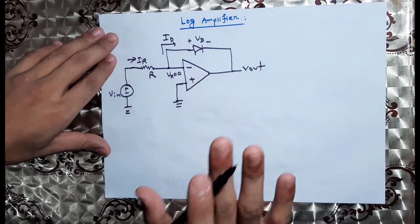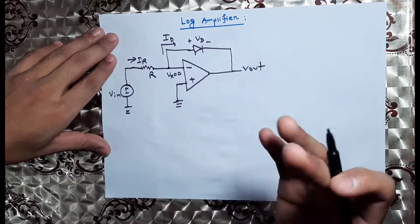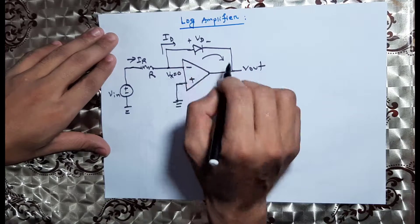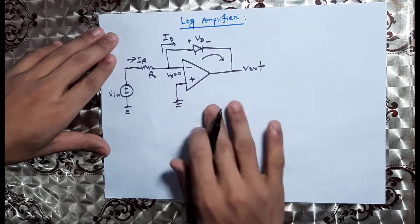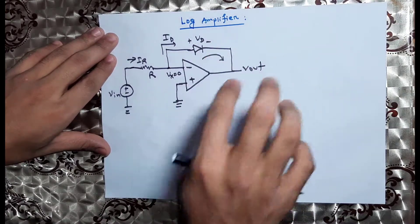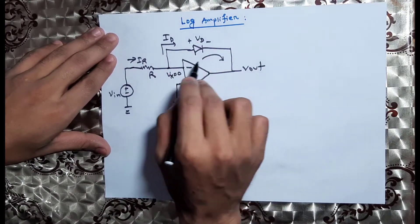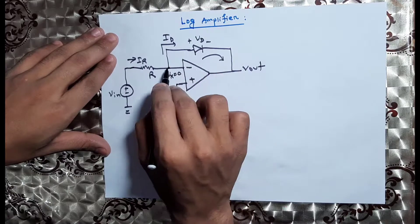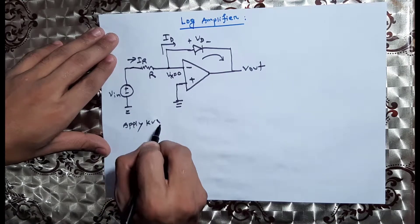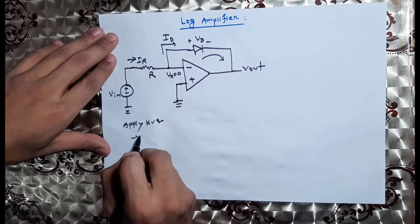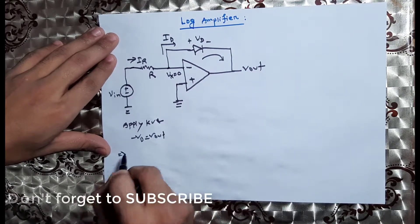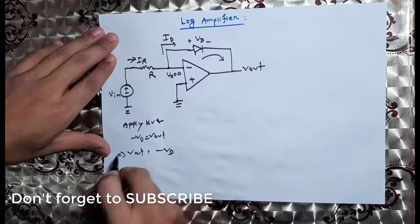The trick to learn the log amplifier and anti-log amplifier is to apply KVL in the loop. We have the loop here with the diode. Applying KVL: VD to Vout. Vout is equal to VD.